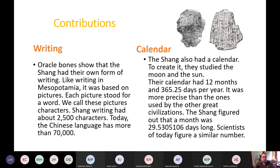One of the contributions of the Shang Dynasty is writing. Oracle bones show that the Shang had their own form of writing. Like Mesopotamia's writing, it was based on pictures, and each picture stood for a word — we call these characters. The Shang writing had about 2,500 characters. Today, the Chinese language has about 70,000 characters.